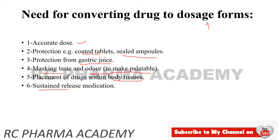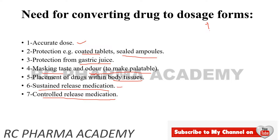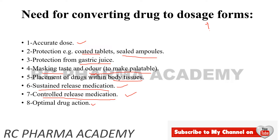Sustained release and controlled release medications are also dosage forms. One dose can last 4 to 5 days, one month, or two months with continuous release. Different types of polymers are used to maintain the optimal maximum level of drug release inside the body.